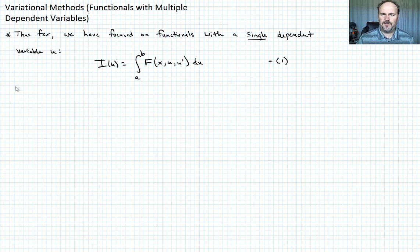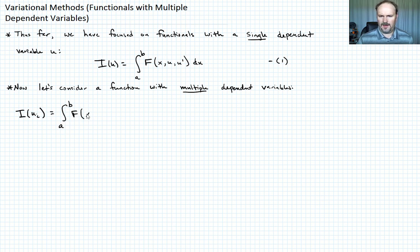Now let's consider a functional with multiple dependent variables. So what does that look like? It looks like i is going to be a functional of u, and I'll put a subscript i there to remind you that there's multiple u's here. And that's going to look like integral from a to b of f, and now we have x and u1, u1 prime.